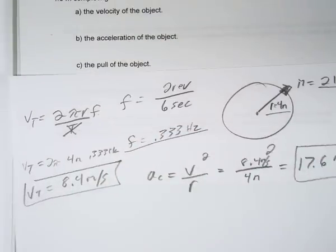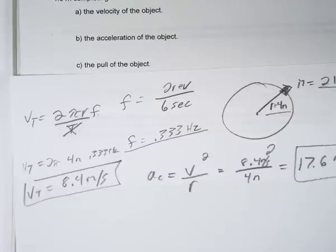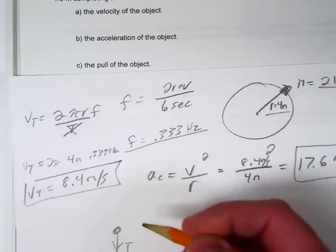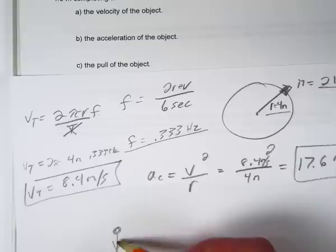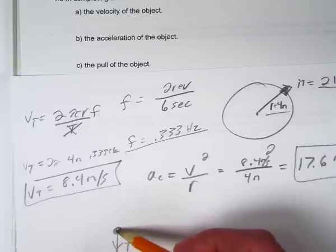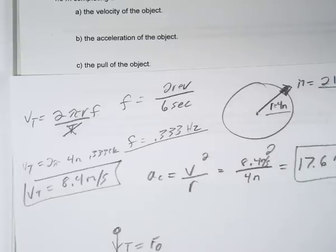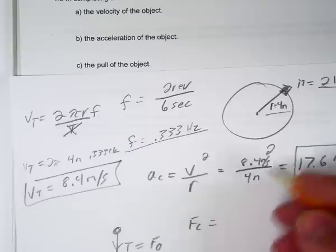Then they ask for the pull of the object - essentially the centripetal force. The string is pulling on the object, that's tension. By Newton's third law, if there's a force on the object from the string, the object must exert a force back on the string. The force from the object equals the tension force, and tension equals centripetal force.